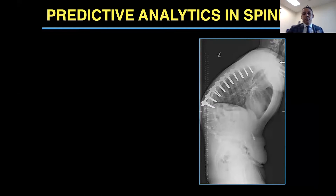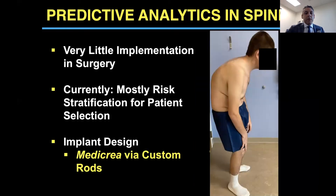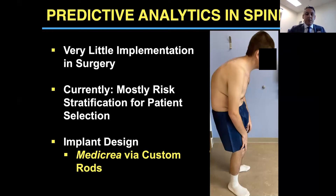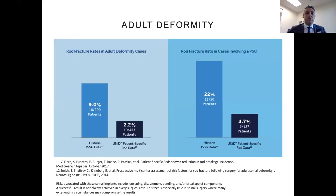When we think about predictive analytics in spine, certainly you have patients who present like this — this is what you want to avoid. But in reality, predictive analytics, although a hot topic in spine, there's very little implementation in actual surgery. Currently in the literature, most of what we're seeing is around risk stratification and patient selection. I'll spend this time talking about Metacrea and how you can utilize predictive analytics in the operating room at the time of surgery.